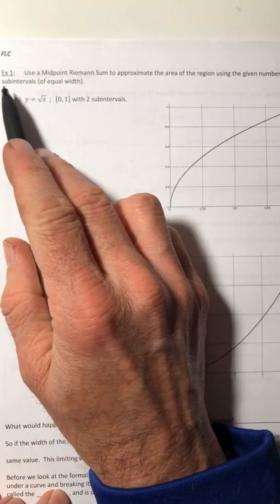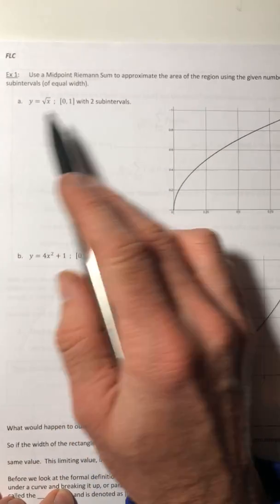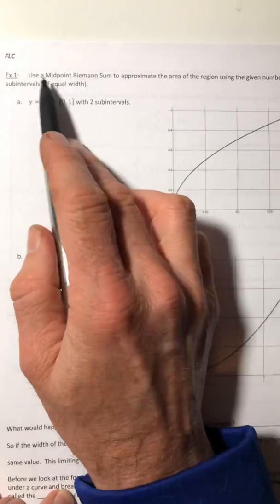All right, welcome back. Let's look at this first example of a type of Riemann sum that we haven't seen yet, the midpoint.